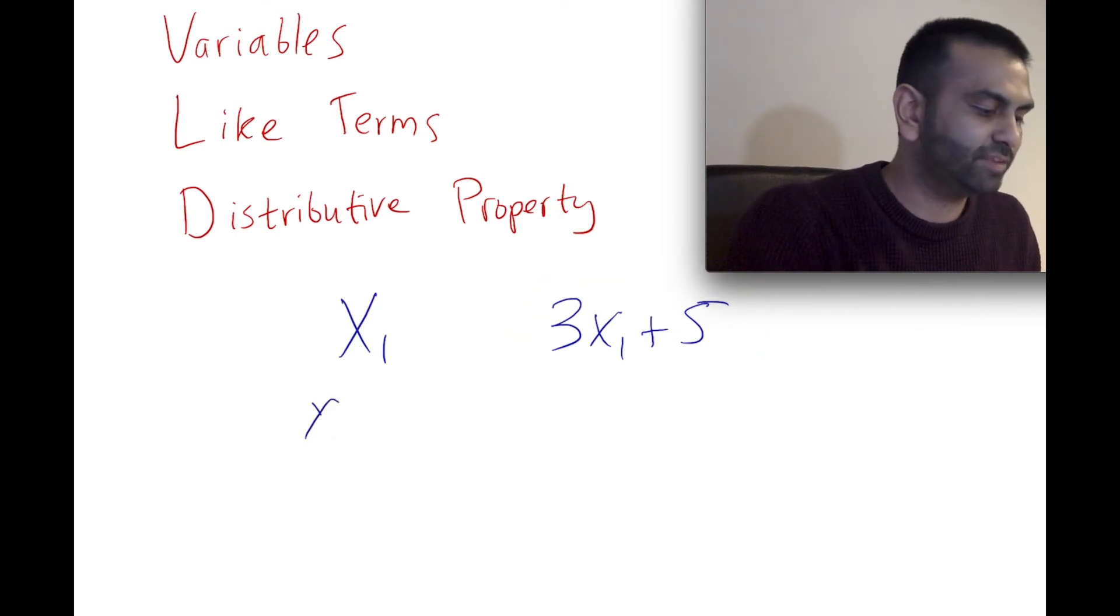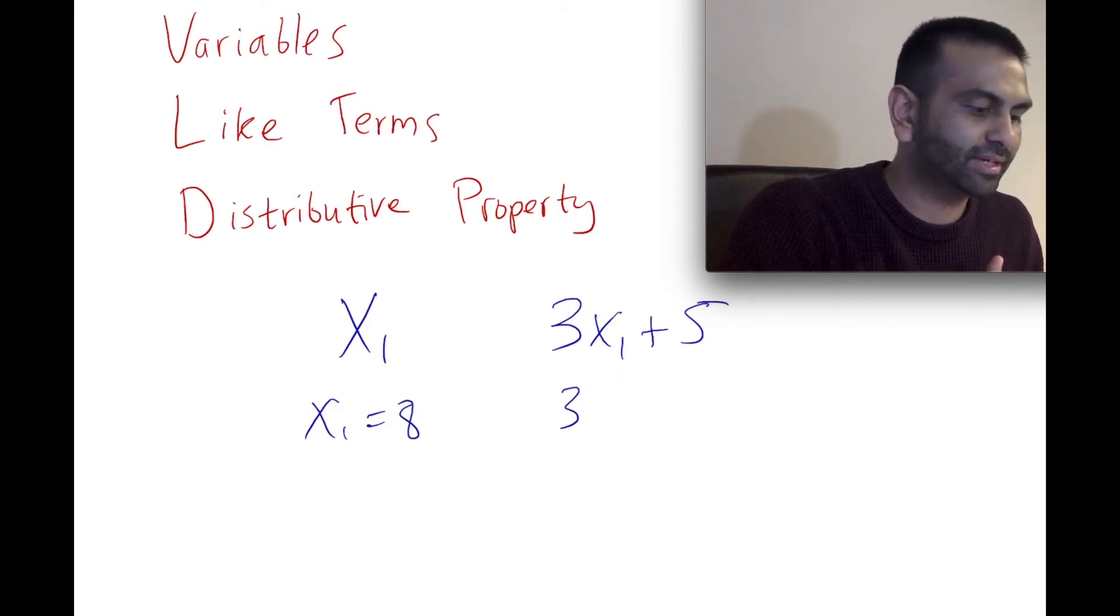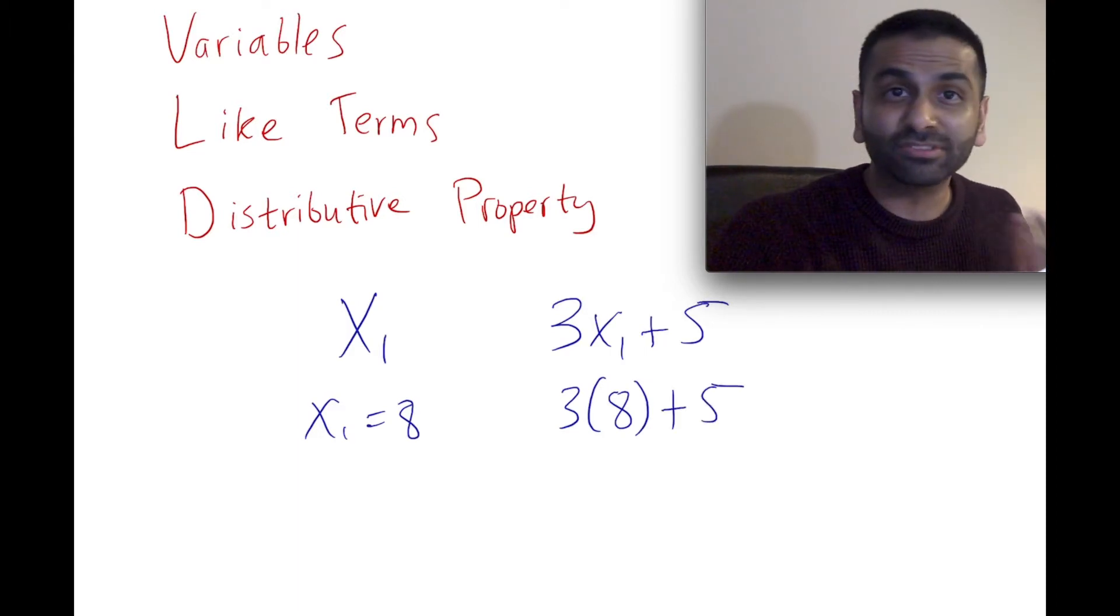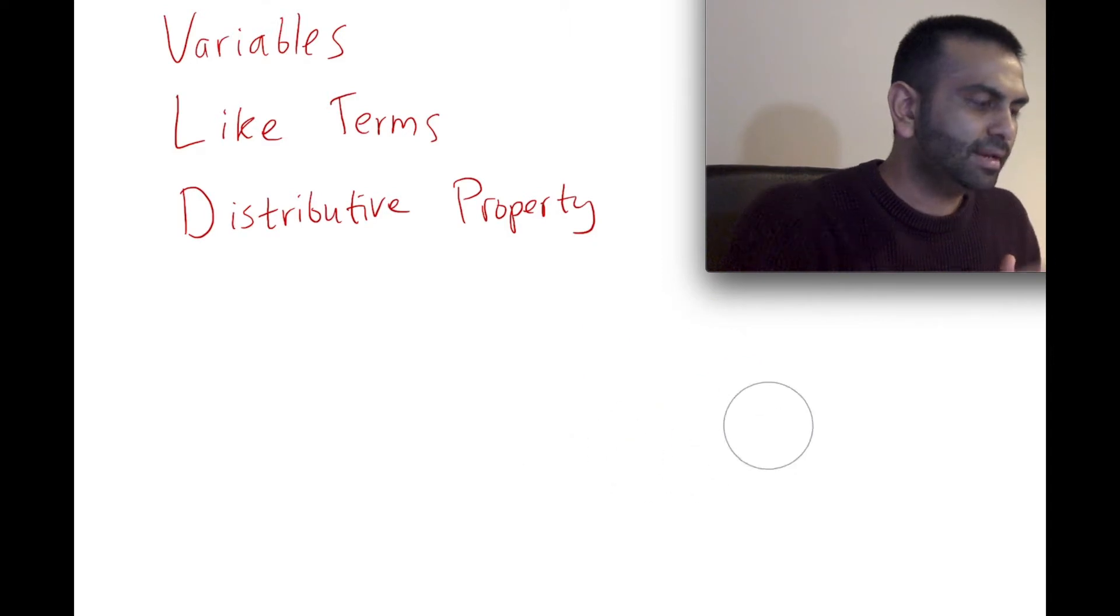All you have to do is, if X₁ equals 8, just replace that variable with what it is when you know what it is. So you would say that's 3 times 8 plus 5, and then simplify. 3 times 8 is 24, plus 5 would be 29, and that's that.